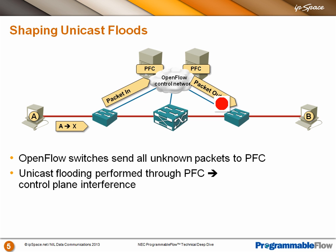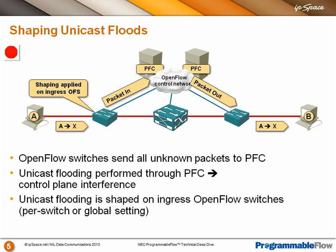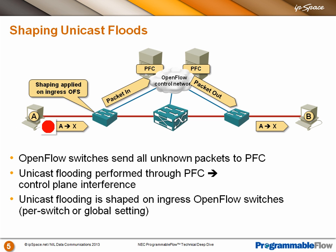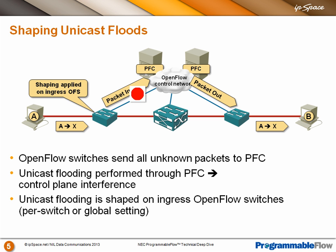That's how it works and there's not much we can do about it. However, we can apply shaping on the ingress OpenFlow switch — again, an extension to OpenFlow — which prevents too many unicast packets from being sent to the controller. This protects the controller from unicast flooding and protects the communication channel so you don't saturate the SSL session with unicast flooding.